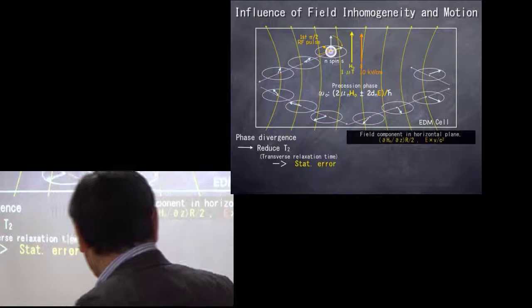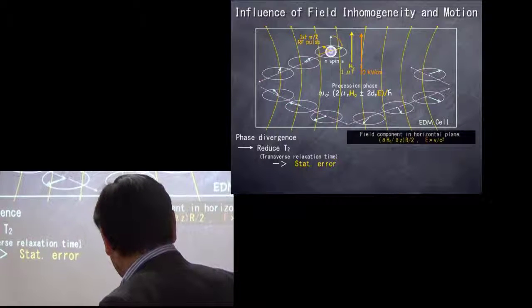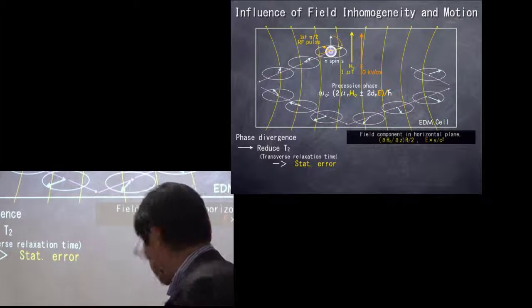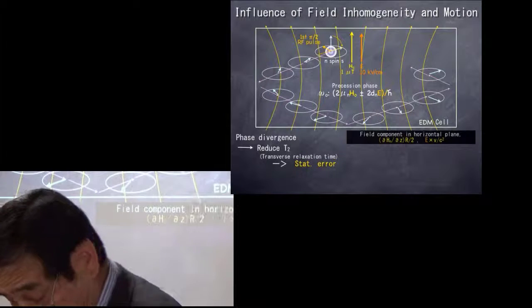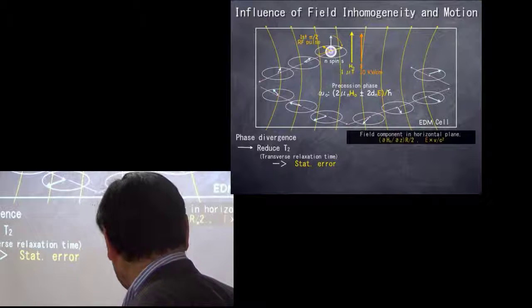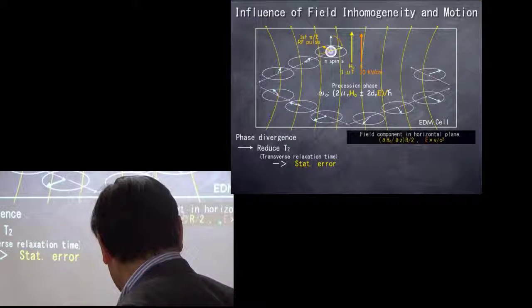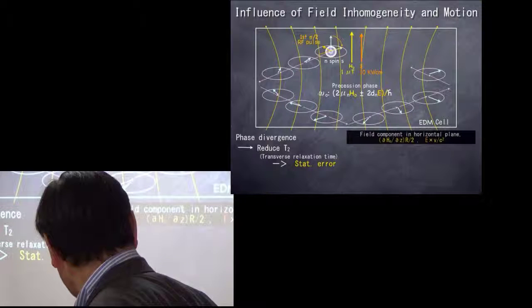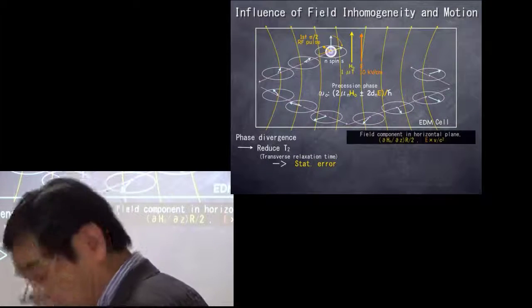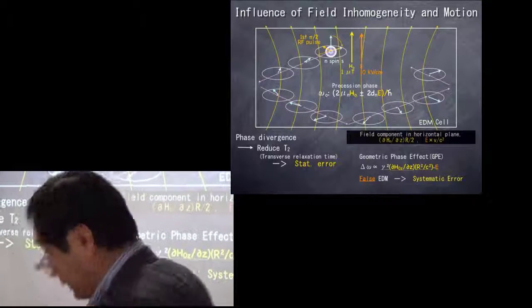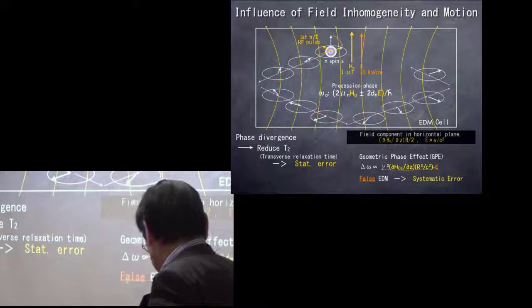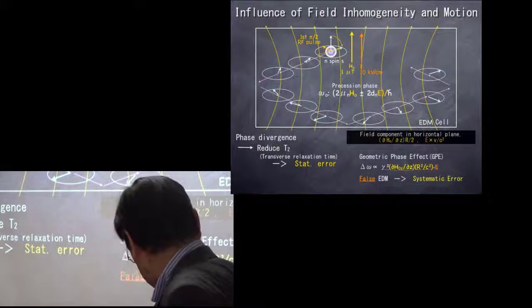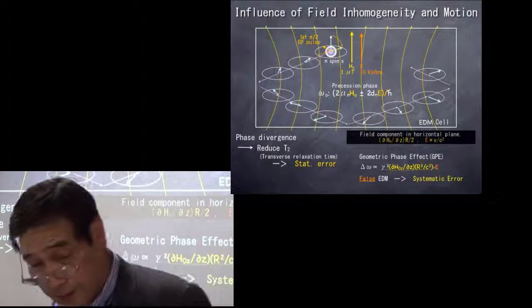And also the inhomogeneity provides us some small amount of the transverse component of the magnetic field and also the relativistic V cross E term. The cross term of these two magnetic fields gives us very small but very fatal false EDM effect. This could be a very serious systematic error.